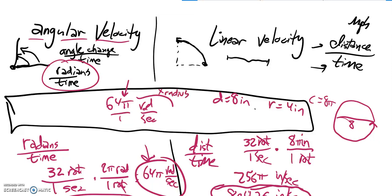And if I multiply the number of radians by the radius, 64 times 4 is 256. It gives me 256 pi.